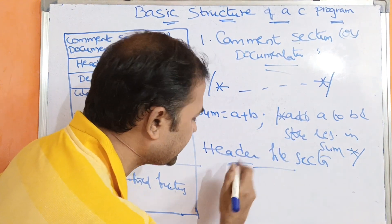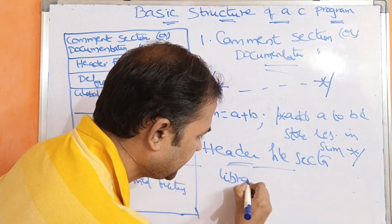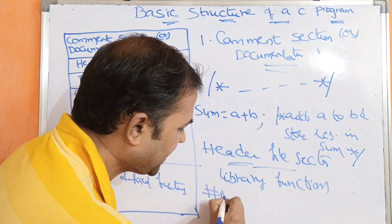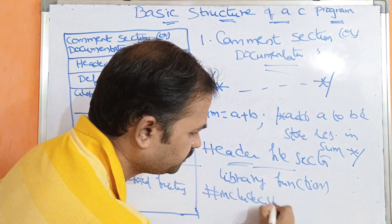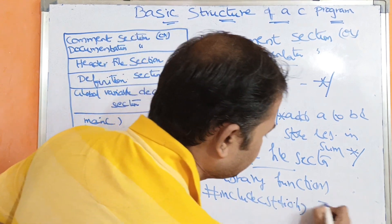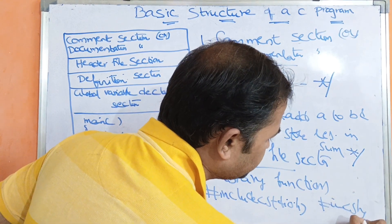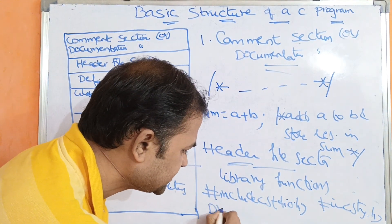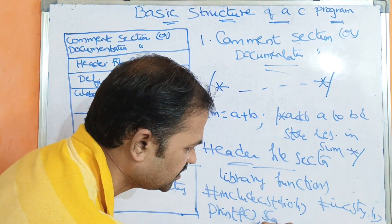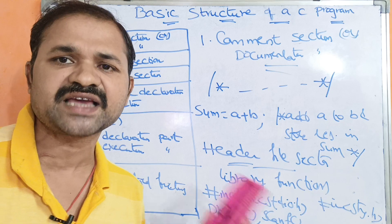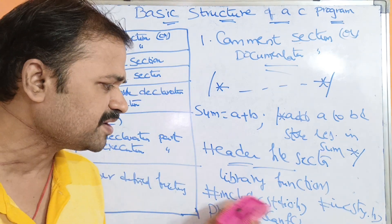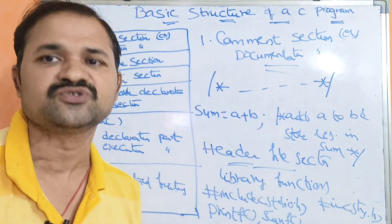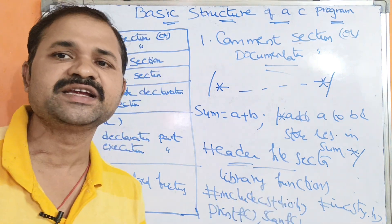The second section is the header file section. In the header file section, a header file is a collection of library functions. For example, hash include stdio.h, and hash include string.h. The stdio.h file contains printf and scanf functions.